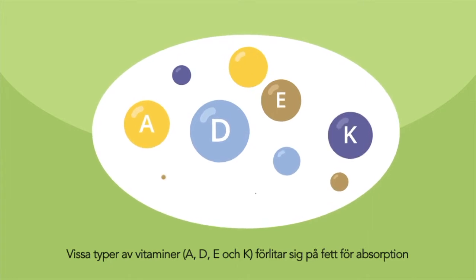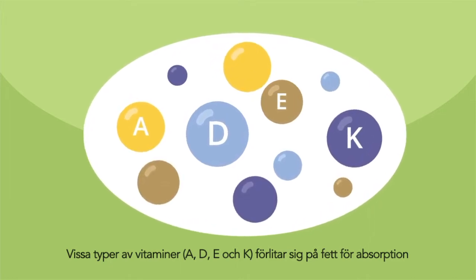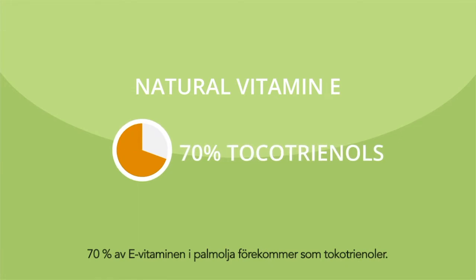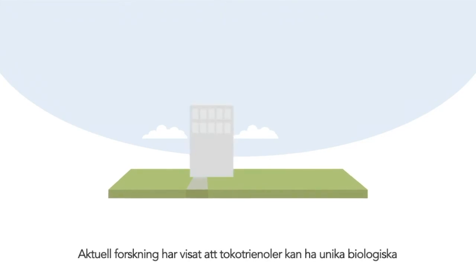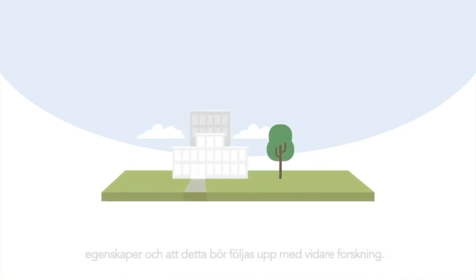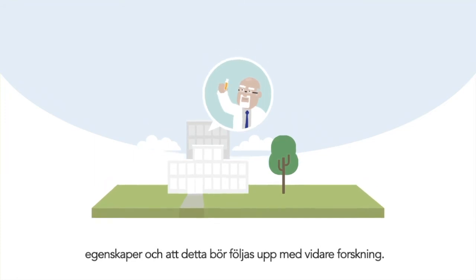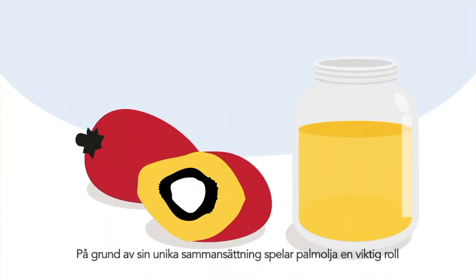Some types of vitamins — A, D, E and K — rely on fat for absorption and storage. Palm oil is a good source of natural vitamin E constituents. 70% of the vitamin E in palm oil occurs as tocotrienols. Current research suggests unique biological properties of tocotrienols and warrants further investigation.